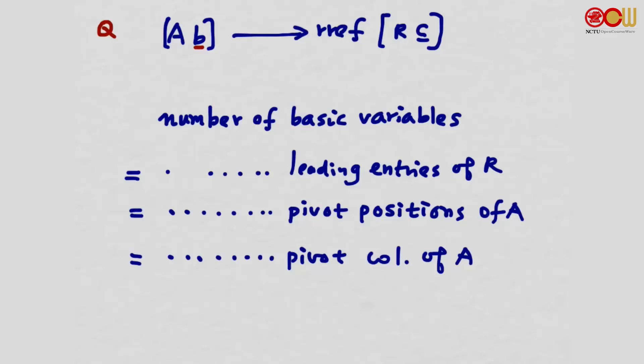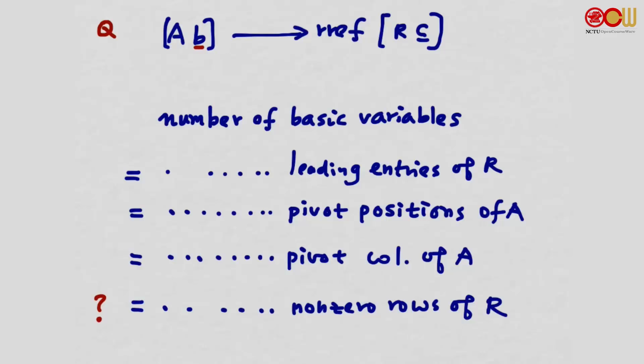Another question: would this number be the same as the number of non-zero rows of R? Think about the definition of a leading entry and its connection with a non-zero row. Whenever we have a non-zero row, we have a leading entry. So again, this is the same number.